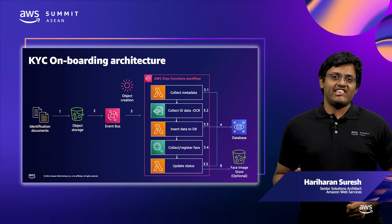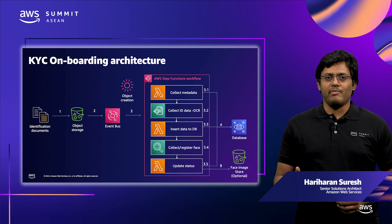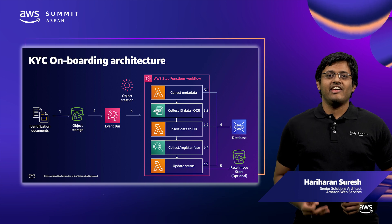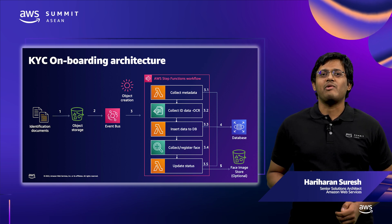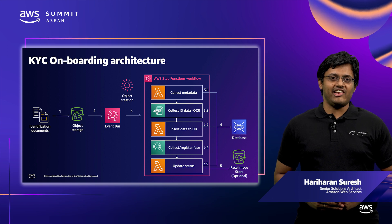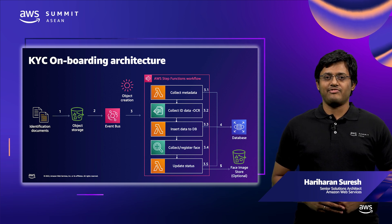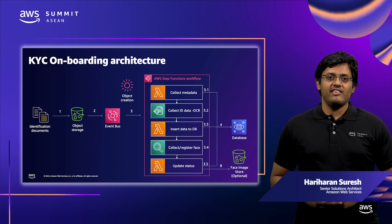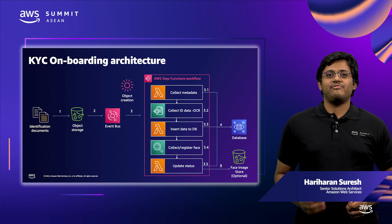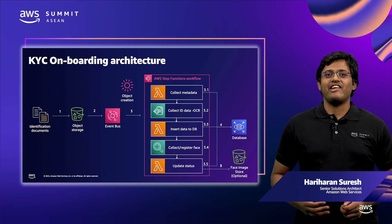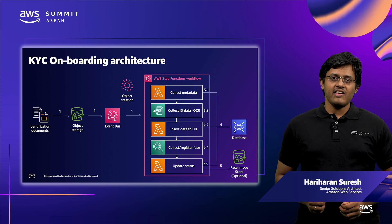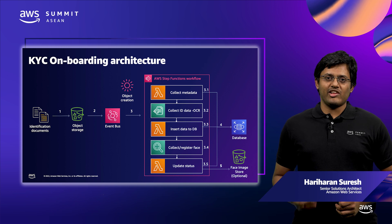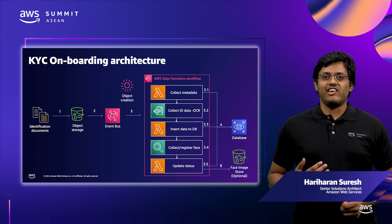This workflow executes optical character recognition on the document, capturing details like name, ID number, issue date, expiry date, and more. Once successfully capturing data, the workflow will trigger a function to detect and capture a face from the document. Once this step is completed, the detected face will be indexed for comparison purposes using machine learning. The metadata about the extracted data and the face information will be stored in the database for transactional verification use cases.